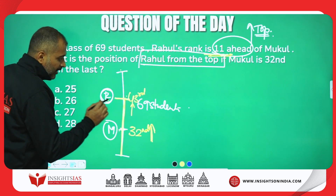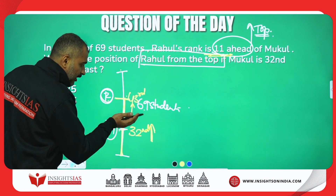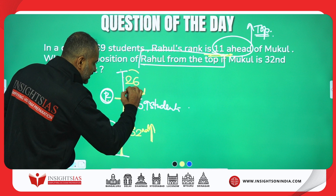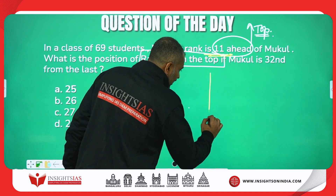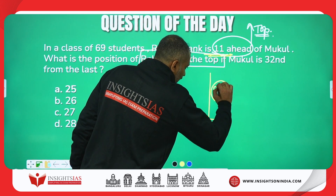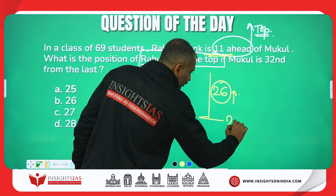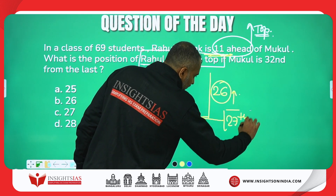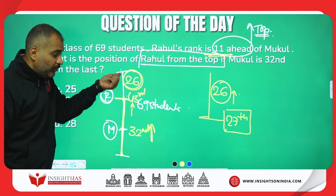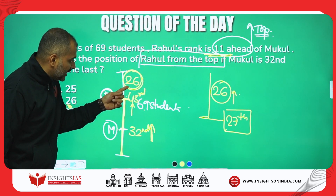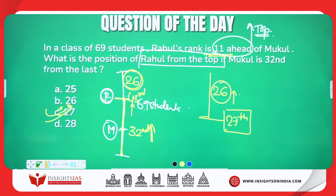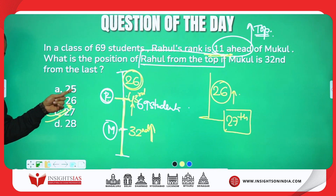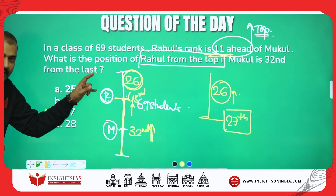Before Rahul, how many people are there? Out of 69, 43 are from the last side — so remaining means 26 people will be before Rahul. In a line, if there are 26 people in front of you, your position will be 27th. If 26 people are ahead of Rahul, then Rahul's position is 27th. Do not just subtract — add plus 1 at the end, or better yet, do the counting rather than the calculation.